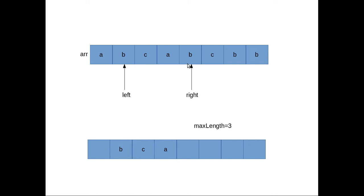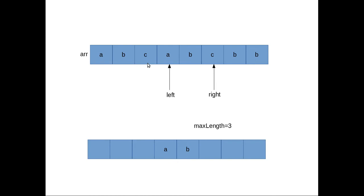Now right is pointing to 'b', which is already in the hash set, so we remove the character pointed to by left, which is 'b', and update left. Right is still pointing to 'b', so we add 'b' to the hash set and update the right pointer. Right is now pointing to 'c' — we remove the character pointed to by left, which is 'c', so we remove that. Right is pointing to 'c', so we add 'c' to the hash set. During all these iterations, the max length remains at 3.